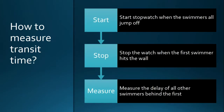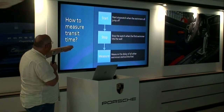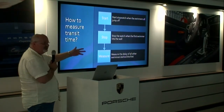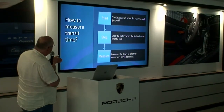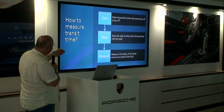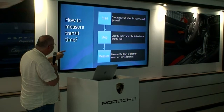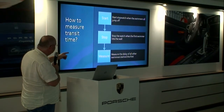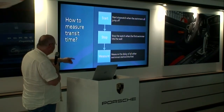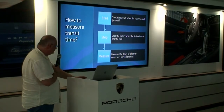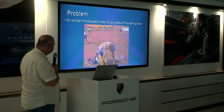Always look at the color bar labeling. So how do we measure transit time? We start the stopwatch when the swimmers all jump off — I'm talking about mean transit time. We stop the stopwatch when the first swimmer hits the wall, but then we have to account for the delay of all the swimmers behind the first, and that's what we color label.